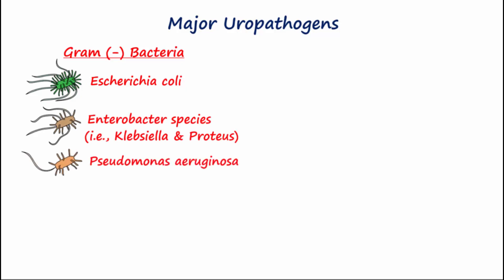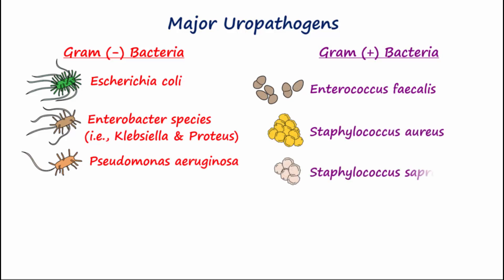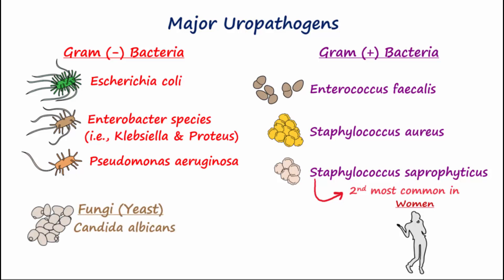UTI-causing gram positives include Enterococcus faecalis, Staphylococcus aureus, and Staphylococcus saprophyticus, which is the second most common bacterial cause of UTIs in otherwise healthy young women. Fungal UTIs caused by Candida species most commonly occur in hospitalized patients with indwelling catheters.